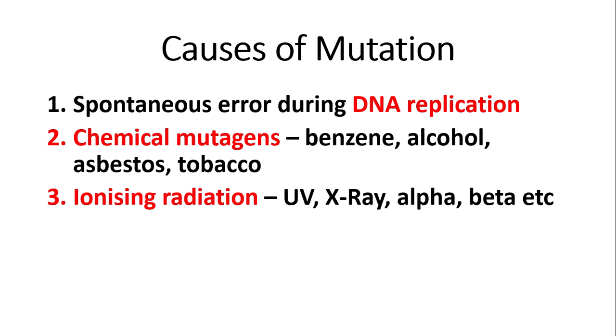We also have ionising radiation — so UV light, X-rays, alpha radiation, beta radiation, and so on. All of these things can cause a mutation.